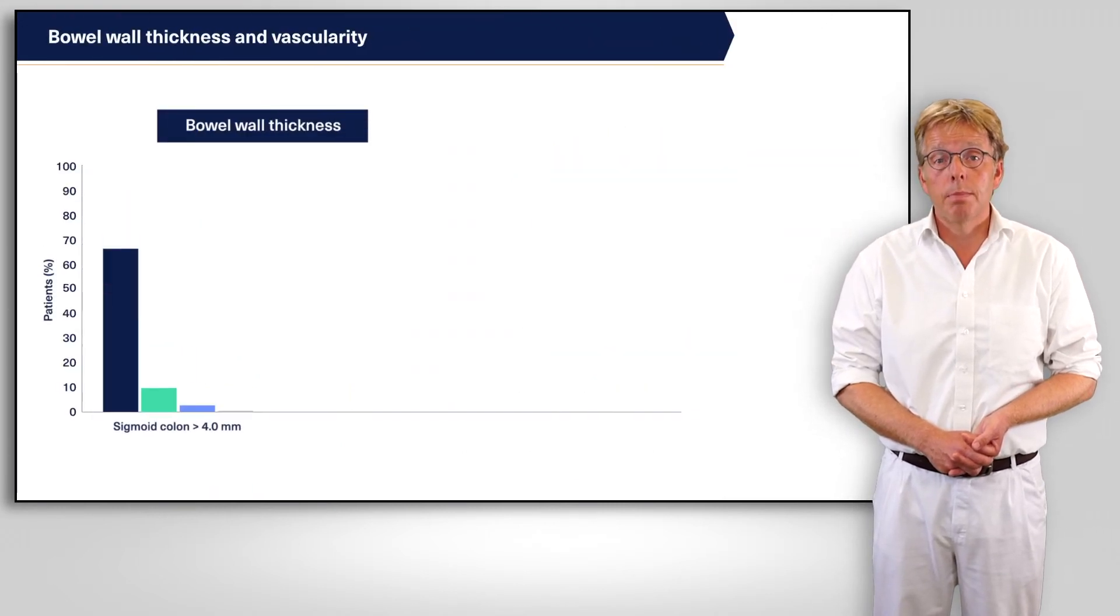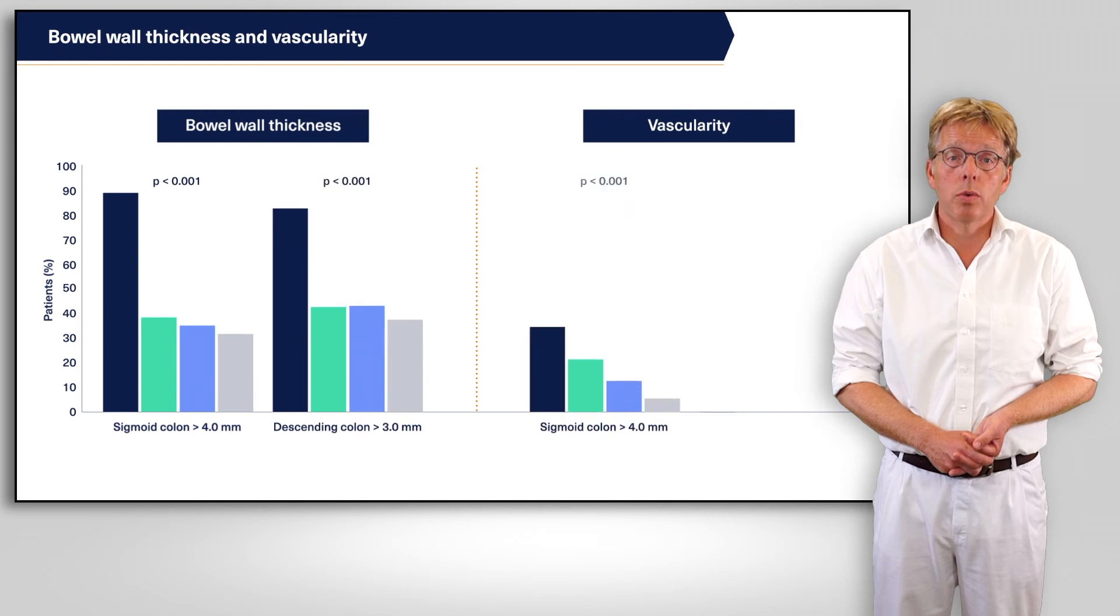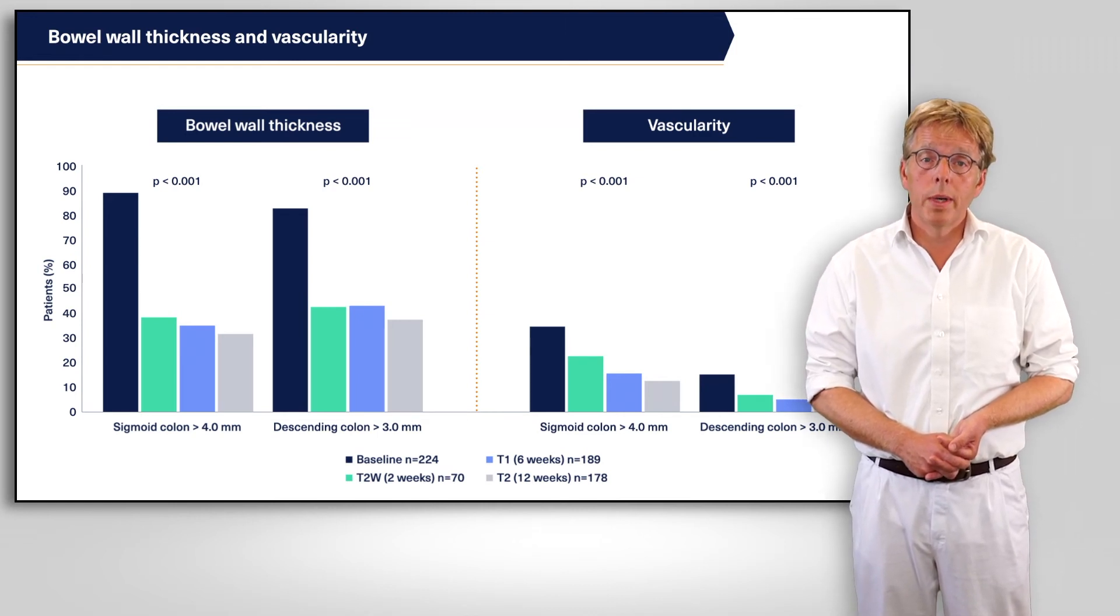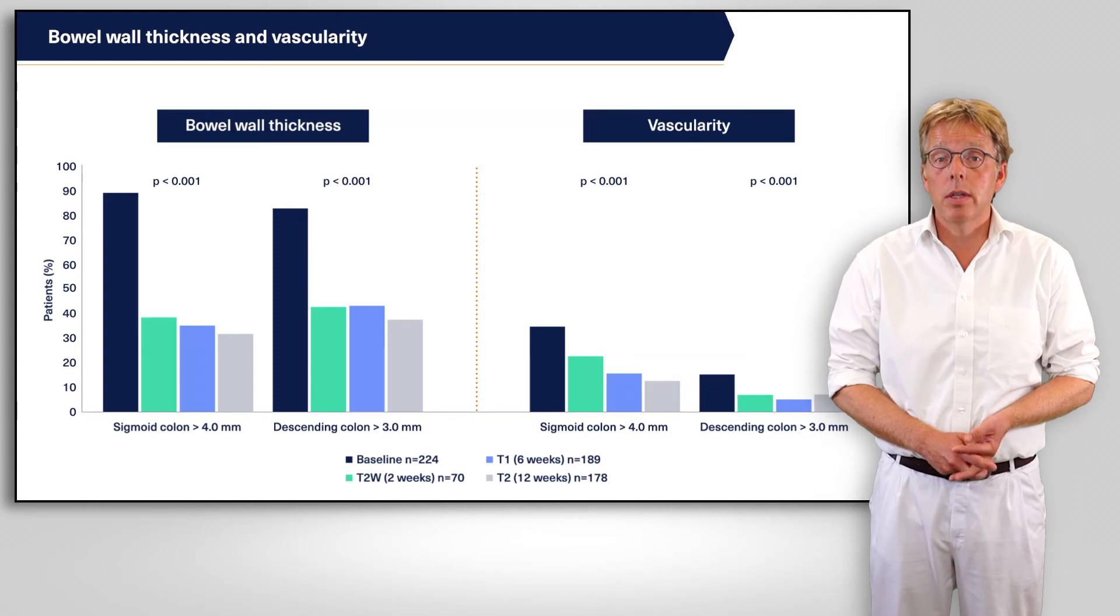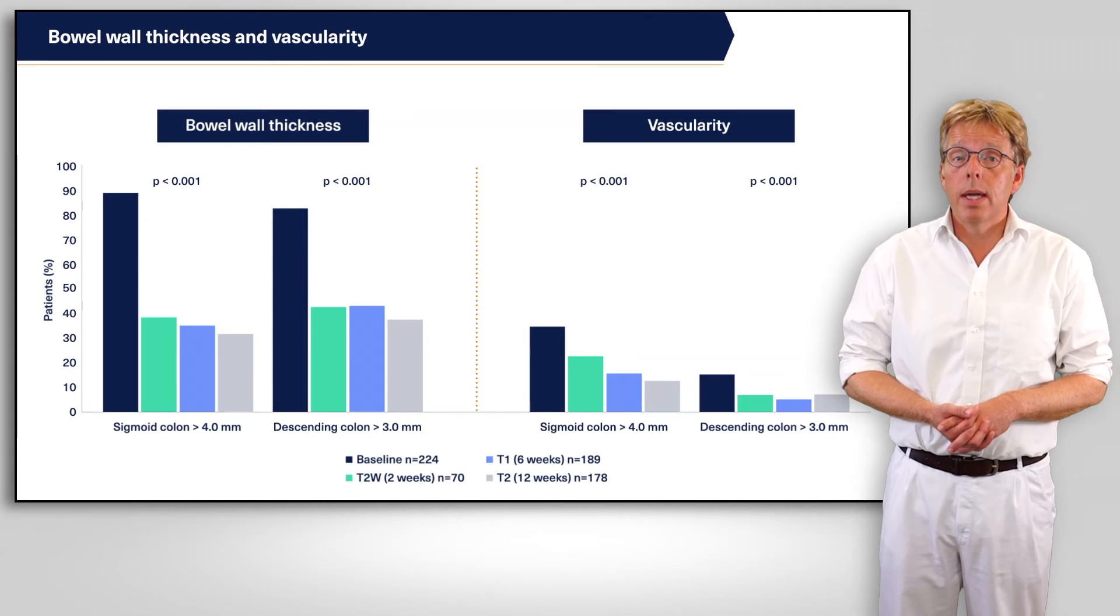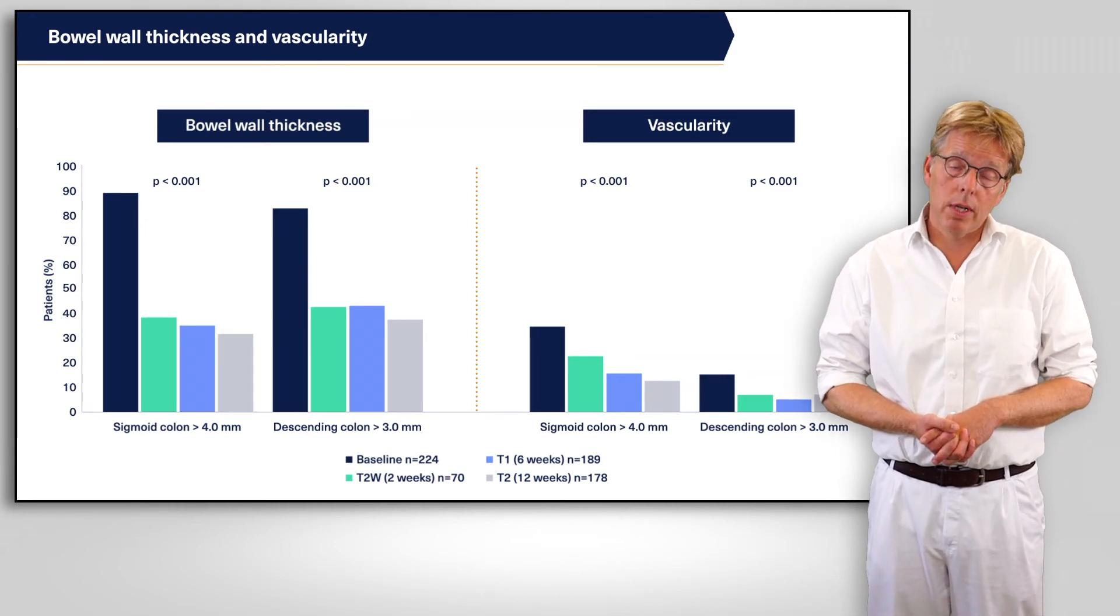The study revealed that both bowel wall thickness, shown here for both sigmoid and descending colon at all time points, and vascularity were significantly decreased as early as two weeks after treatment intensification, therefore at a very early time point, and remained low until the end of the study period.